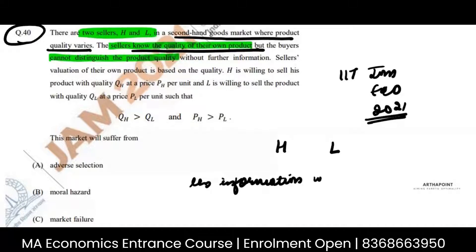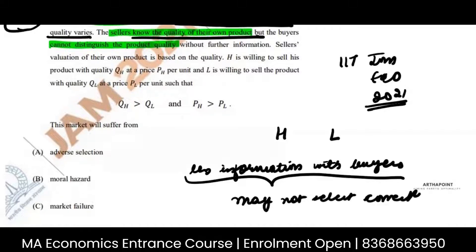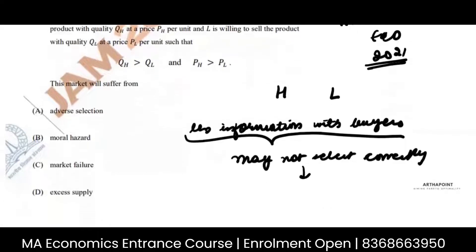With buyers. When there is less information with buyers, it means buyers may not be able to select properly. May not select correctly. So buyers are facing the problem of adverse selection. Definitely buyers have a problem of adverse selection because they don't know what is the quality of the product.